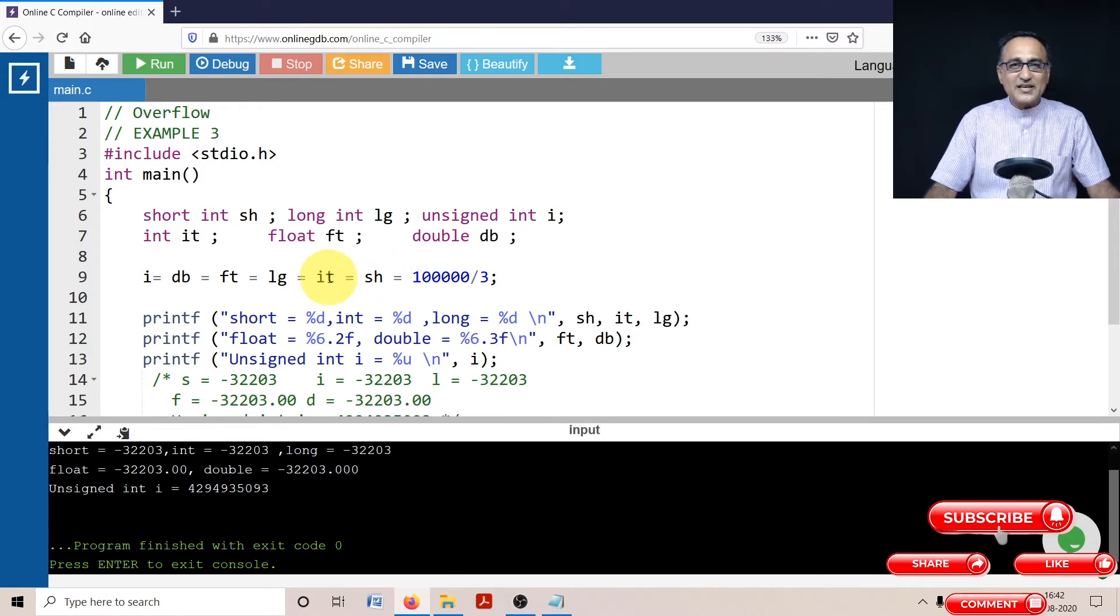This negative value gets assigned to int, the same gets assigned to long, same gets assigned to float, double and the unsigned integer value i.